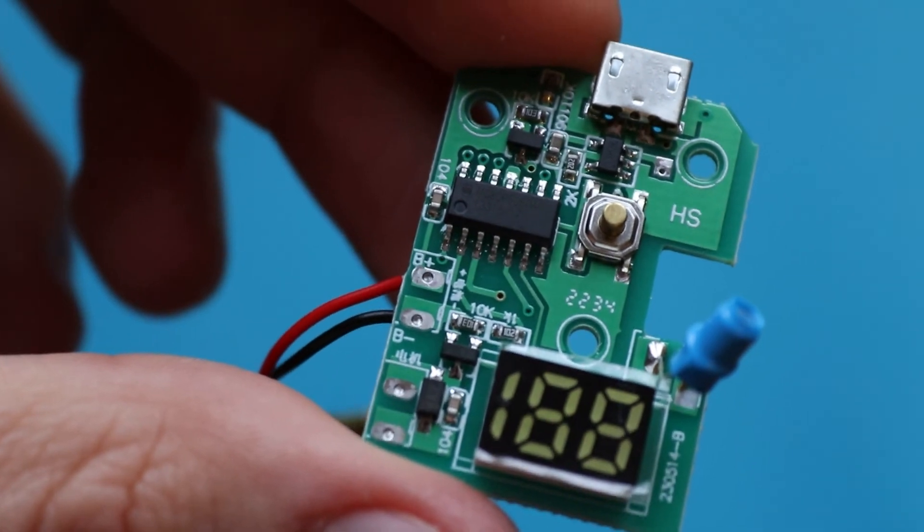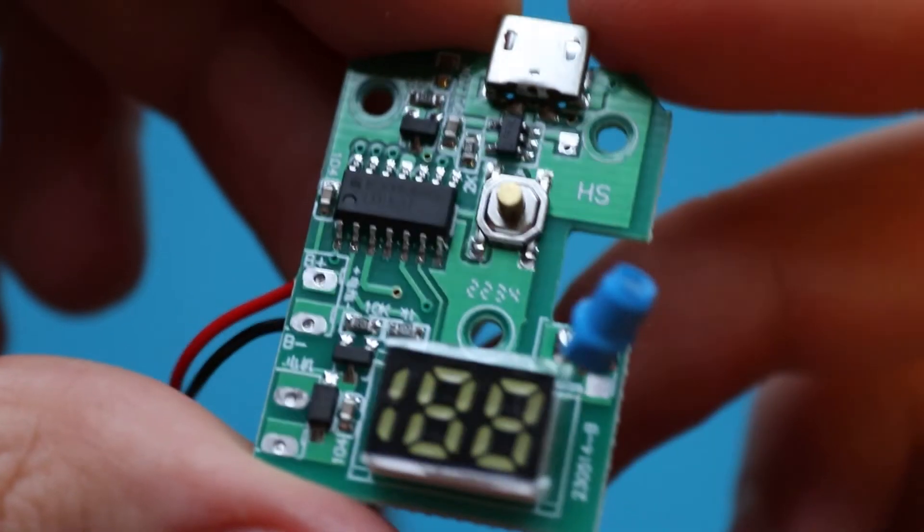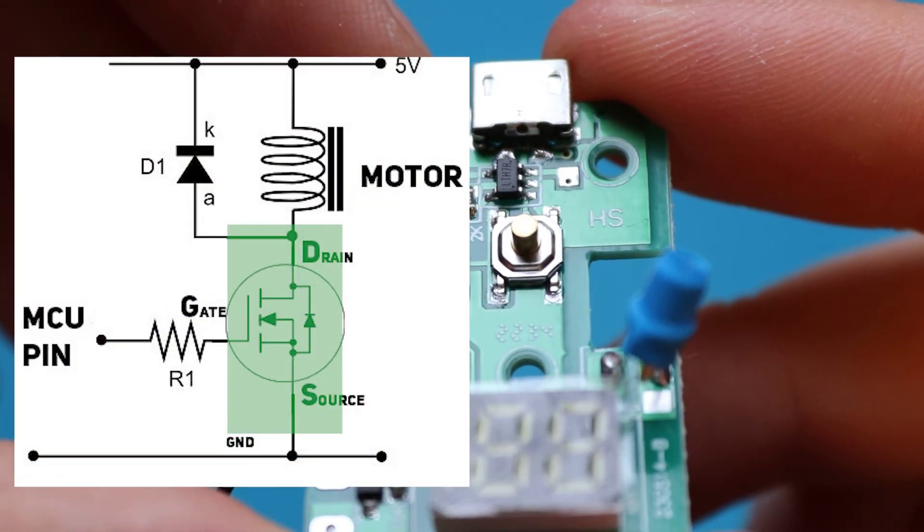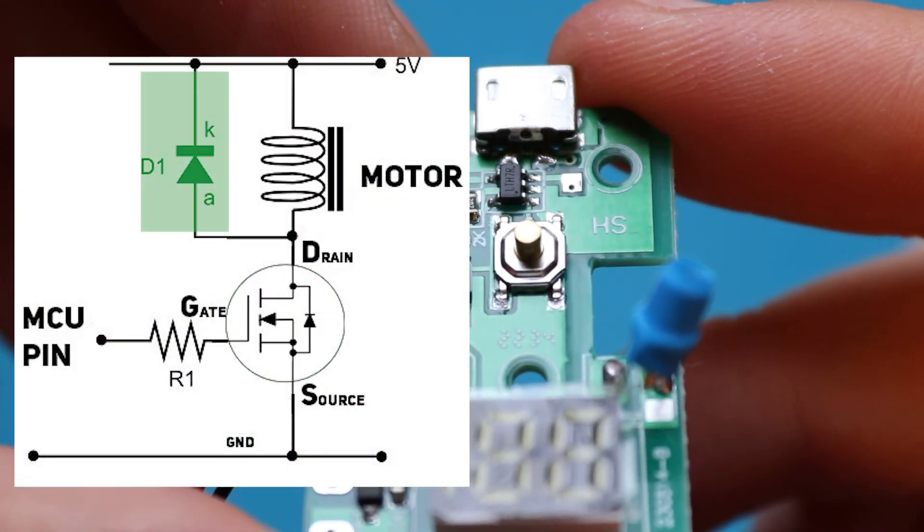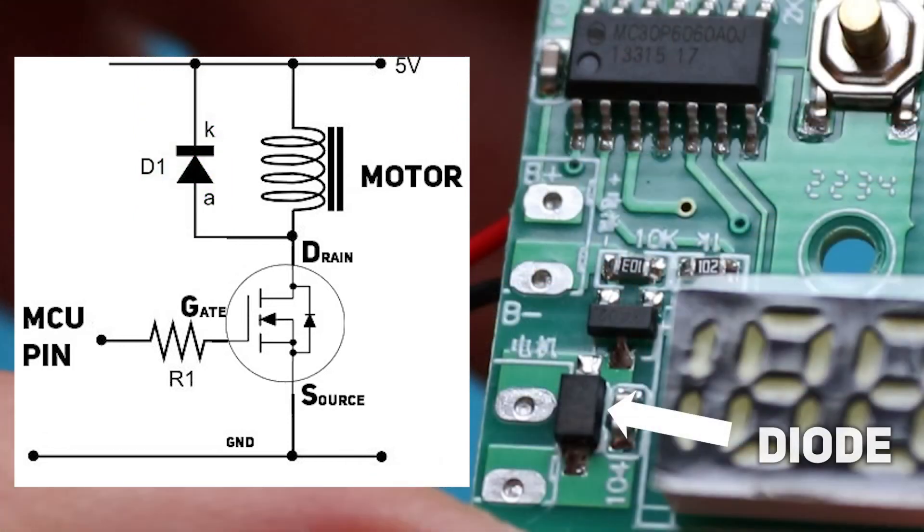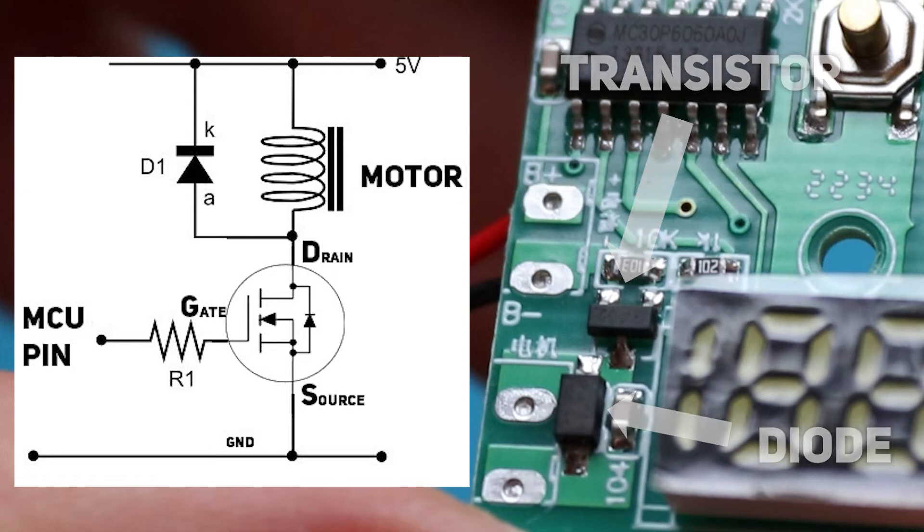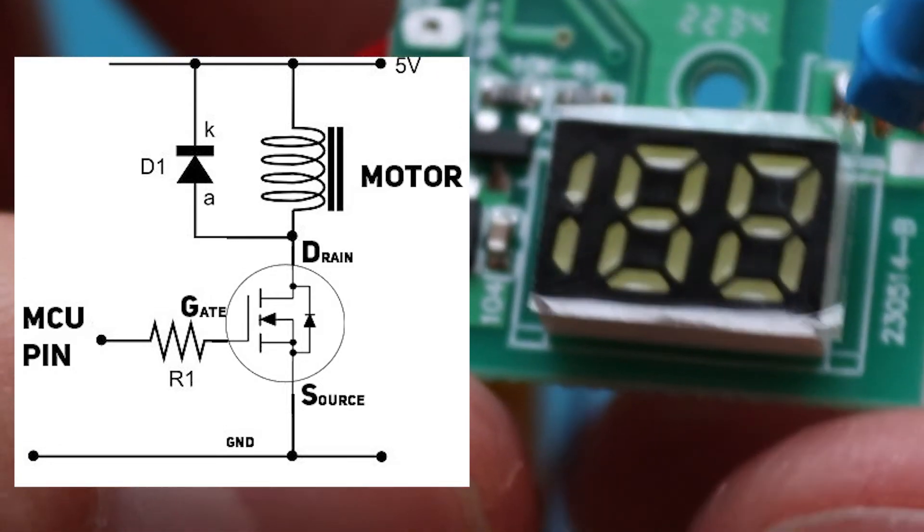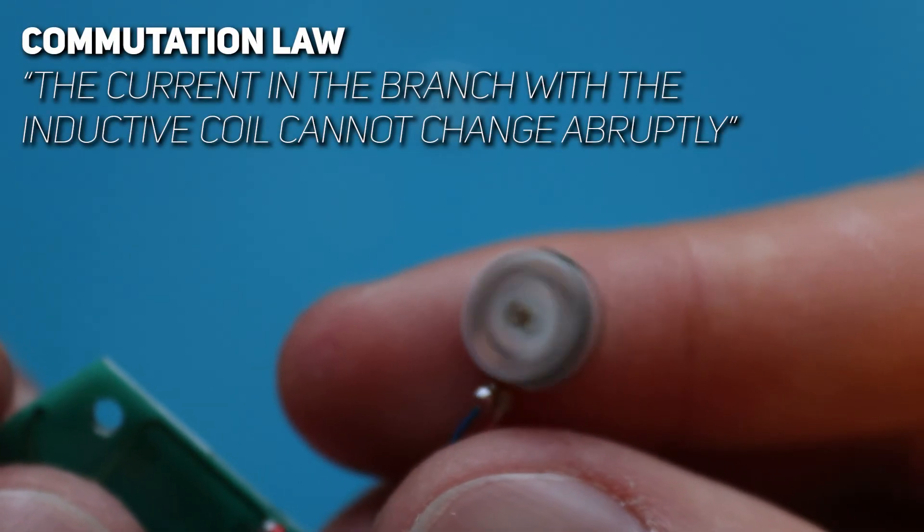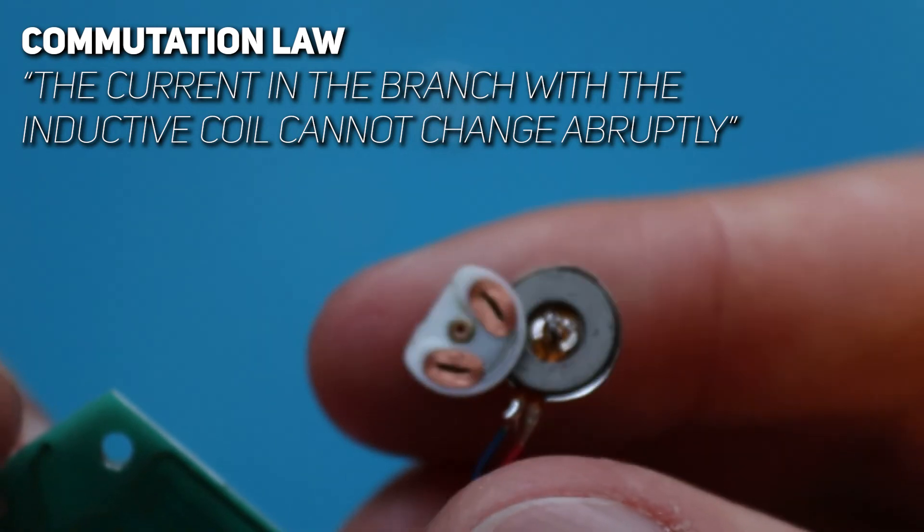The thing is that the motor consumes more current than the microcontroller can provide and because of that, the motor is connected through a transistor. Moreover, in parallel to the motor there is a diode. The diode is a must-have in such a circuit. Without it, that transistor probably would burn out. So the question is why?